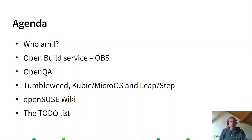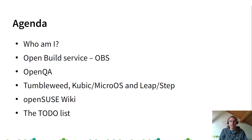Then we will have a look at the OpenBuildService side and the tests on OpenQA. We will talk about Tumbleweed, Kubic, MicroOS, Leap, and STEP. Then we will talk about the openSUSE wiki and finally the to-do list.